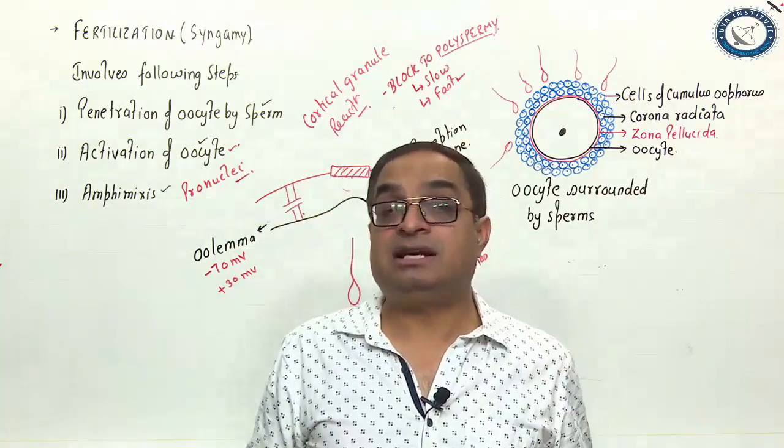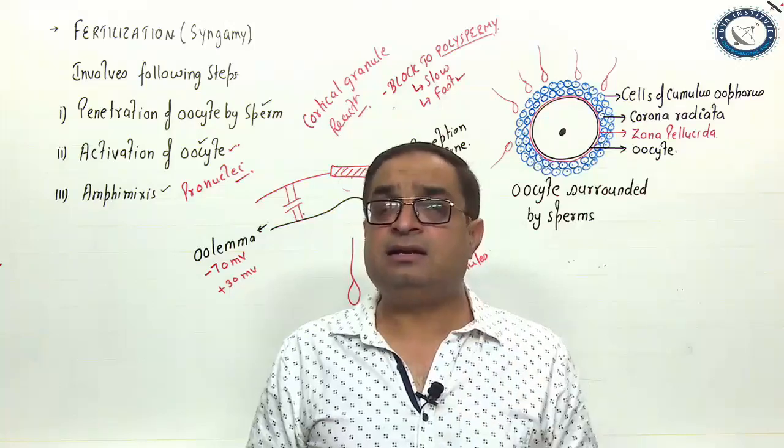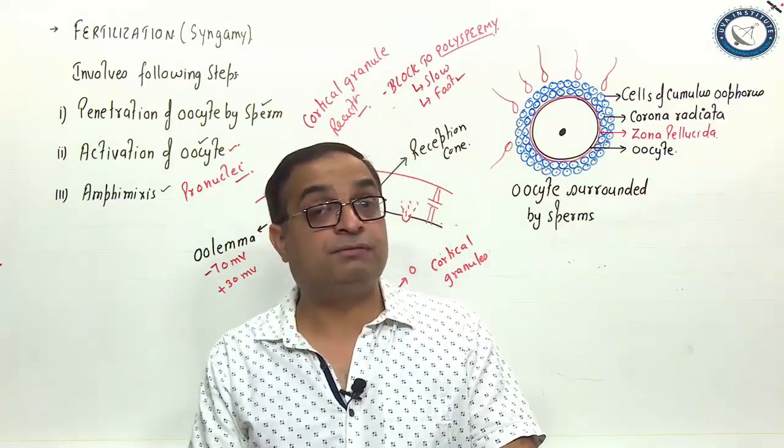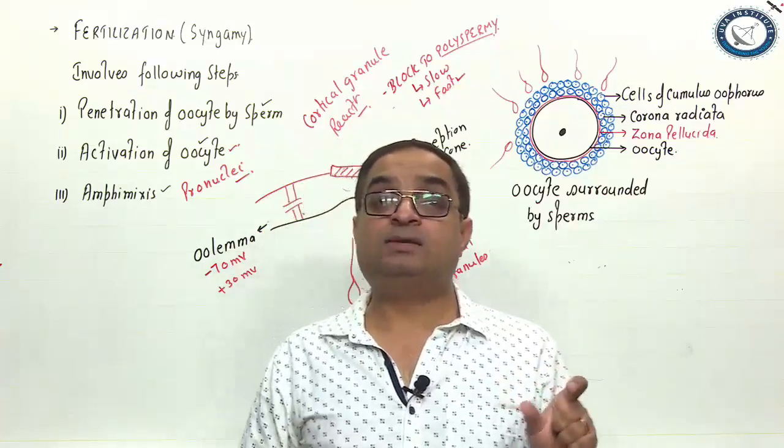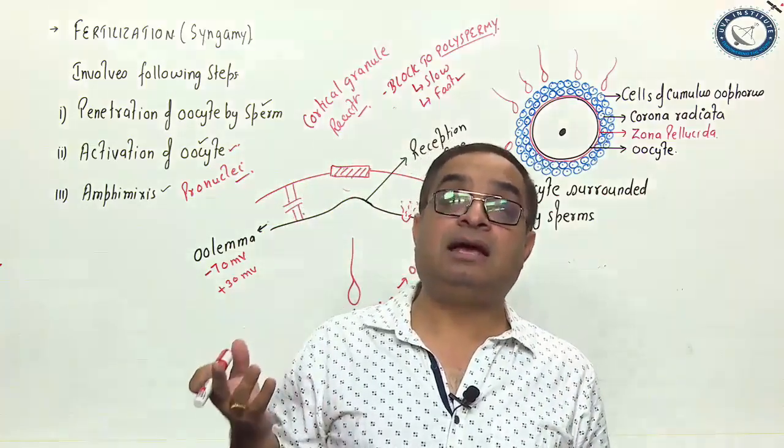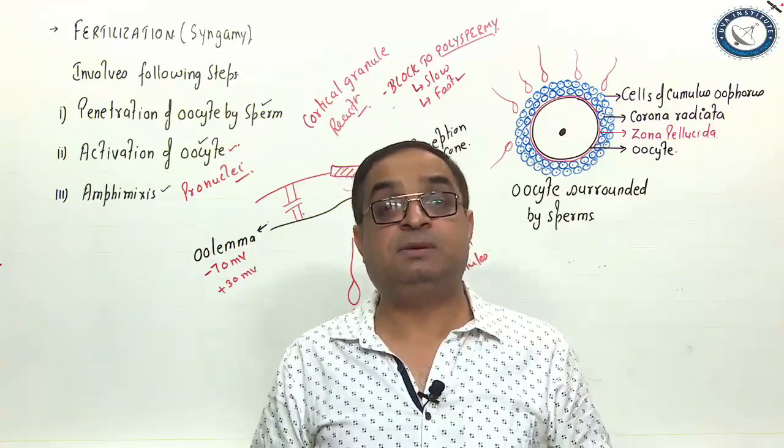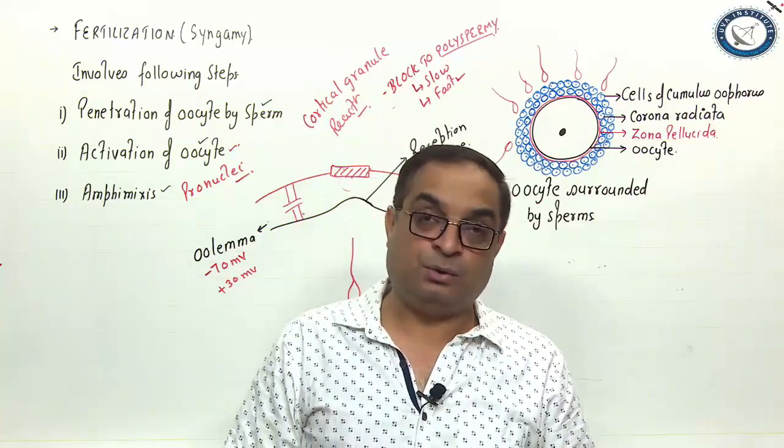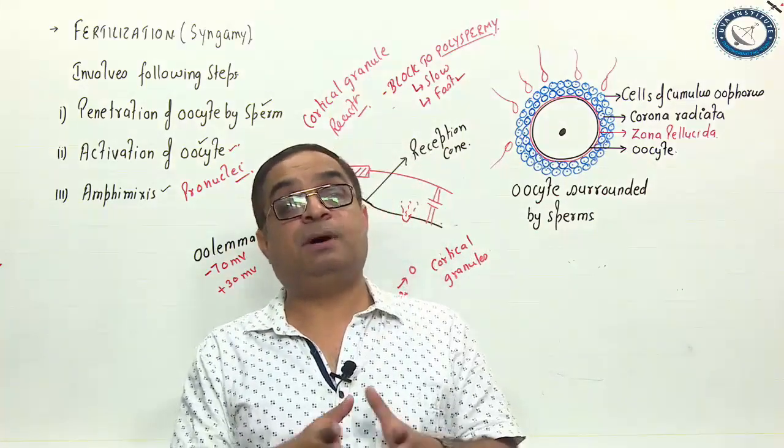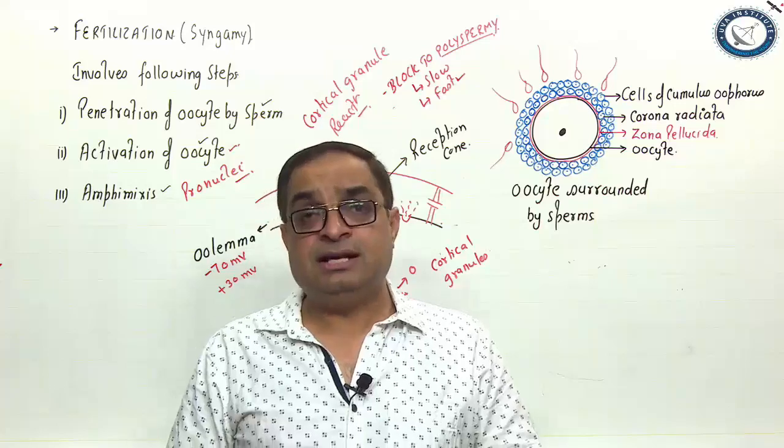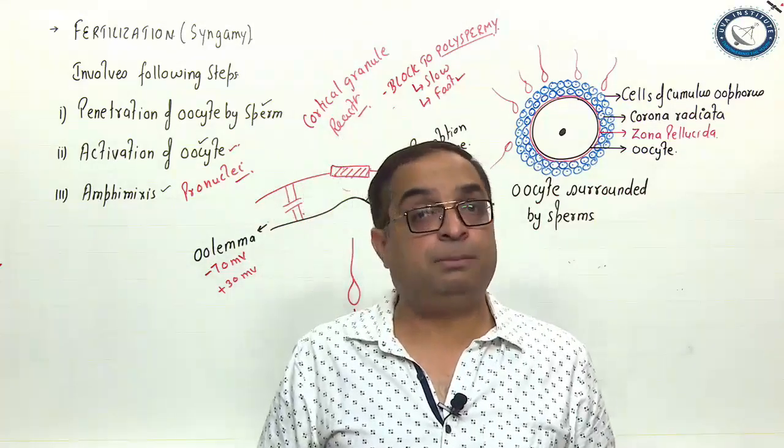We can say that as a result of fertilization, a single cell diploid structure which is called zygote is formed. Two haploid cells, ovum which is the female gamete and the sperm, they are fusing to form a single cell which is diploid, that is zygote. That was about fertilization. One significance of fertilization is that it restores the normal diploid condition.